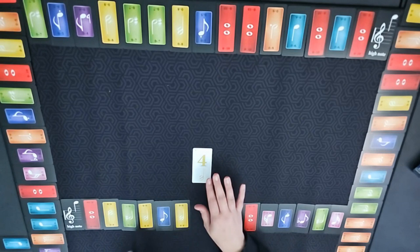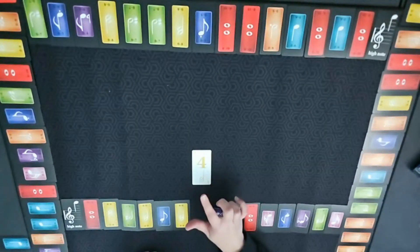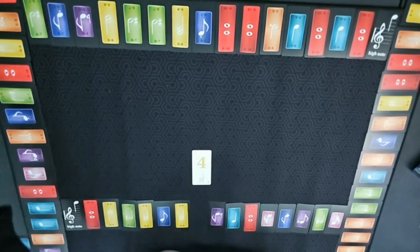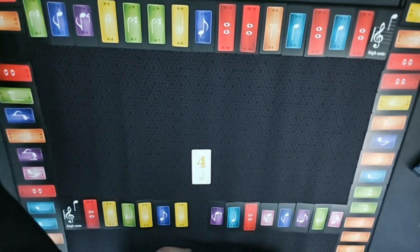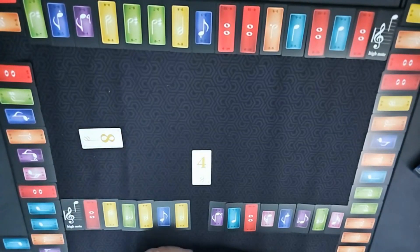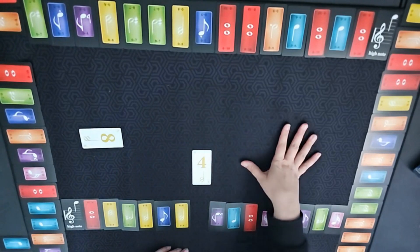Now trick-taking game. So everybody, the suit right now is yellow. So everybody has to play a yellow if they can. So this player here only has one yellow so he has to play this one. And he's playing an eight. So this person here has a couple of yellows he's going to play.